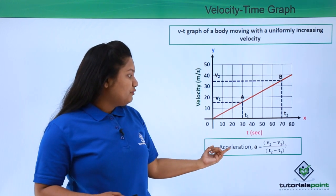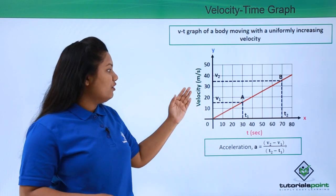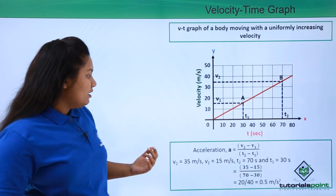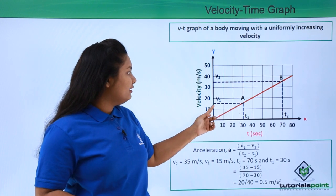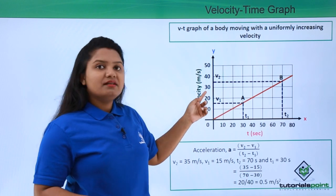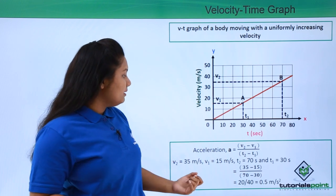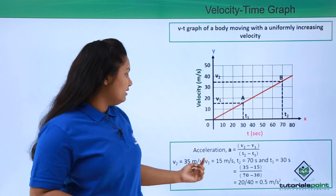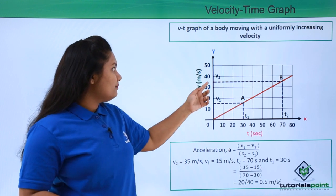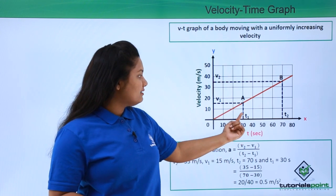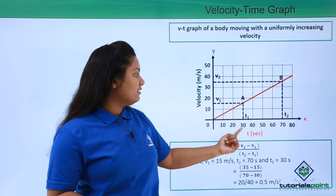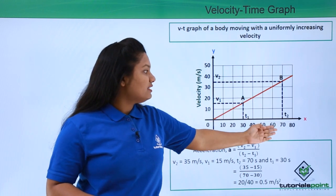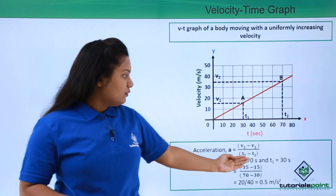Now we will use this formula to find the value of acceleration in this case. We see that the value of v1 lies between 10 and 20, so we can write it as 15 meters per second. Similarly, v2 is 35 meters per second. The value of t1 is 30 seconds where this line touches the x-axis, and t2 is 70 seconds where the other line touches the x-axis.